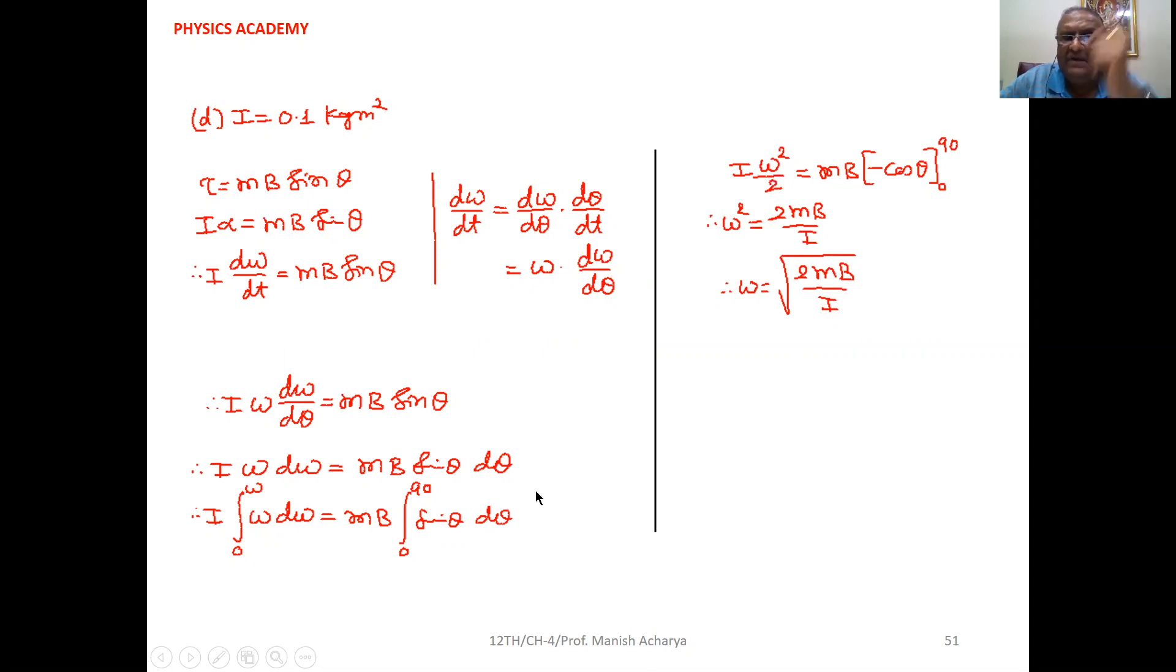On right hand side, MB integration of sin θ is -cos θ. If we substitute first upper limit, -cos 90 is 0. Then minus minus cos 0, so that is 1. It implies that this bracketed part will be equal to 1.